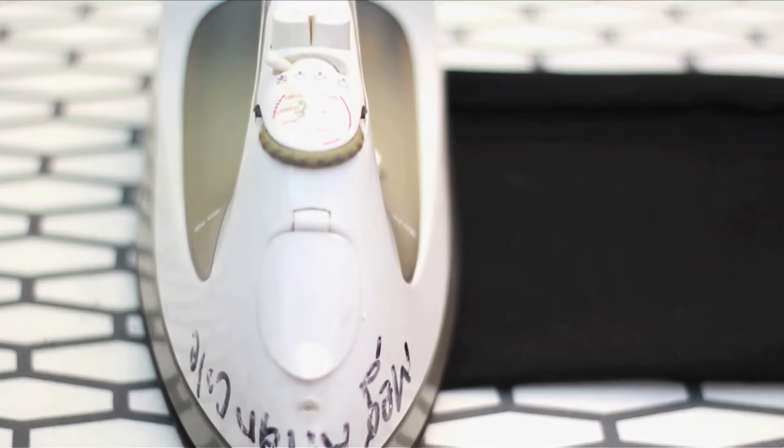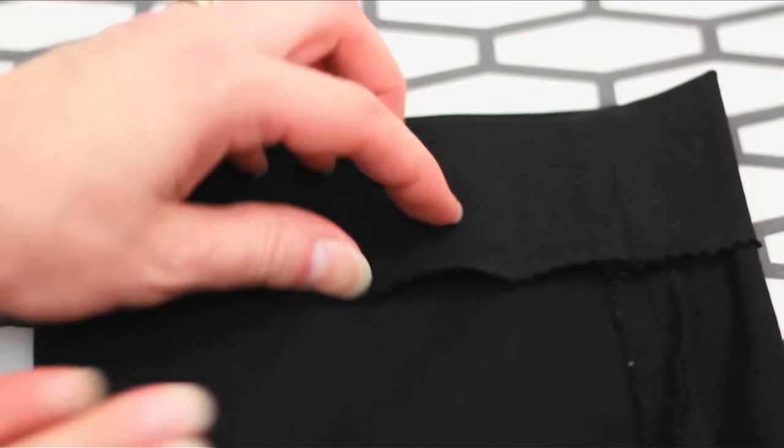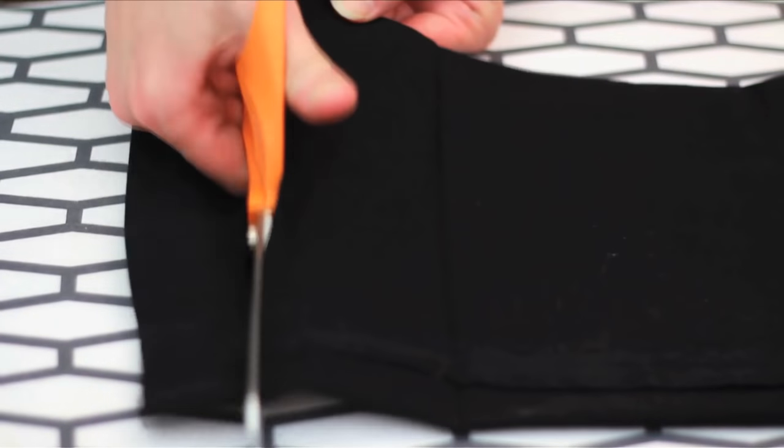Iron for a full minute. You'll see that the heat fuses the tape to the material of your pants, acting as an official new hemline. Repeat all of these steps on both legs.